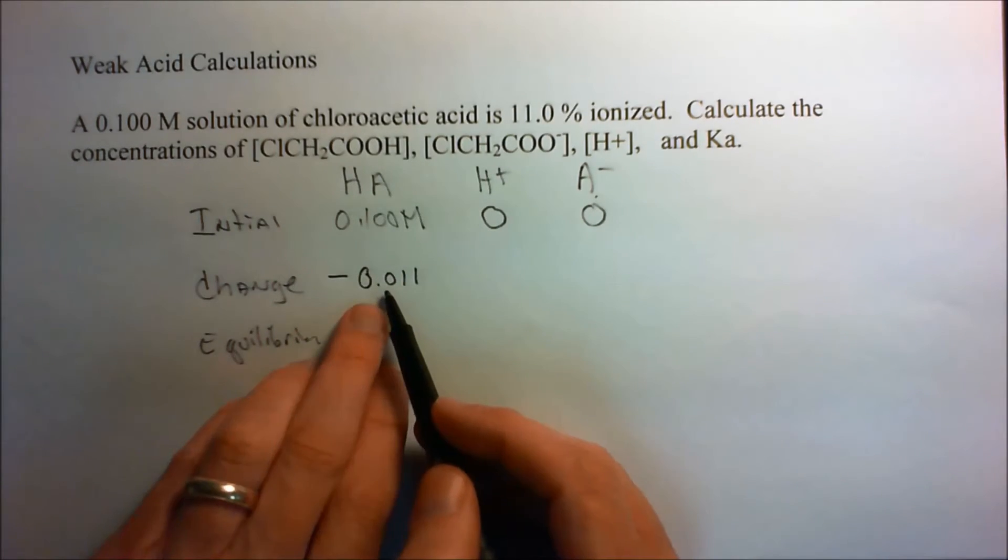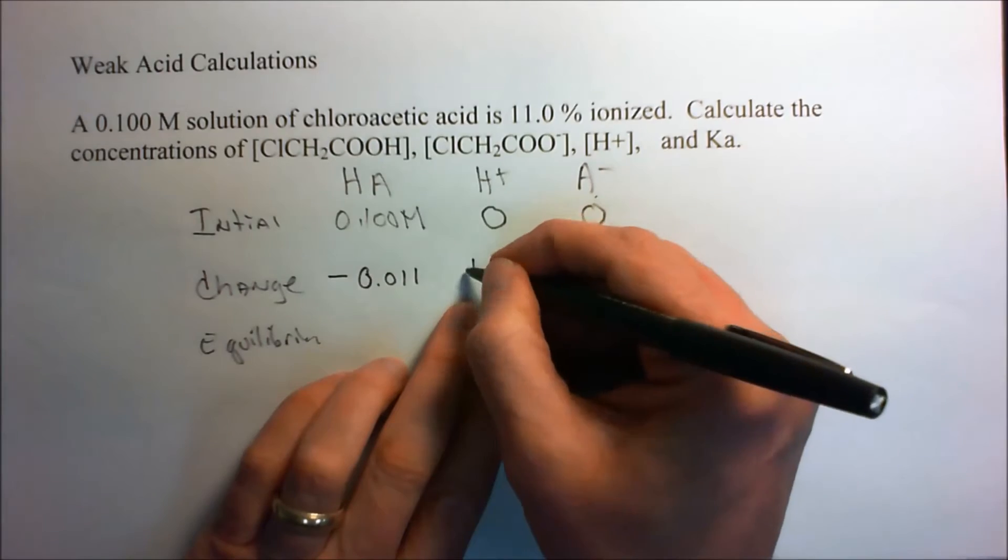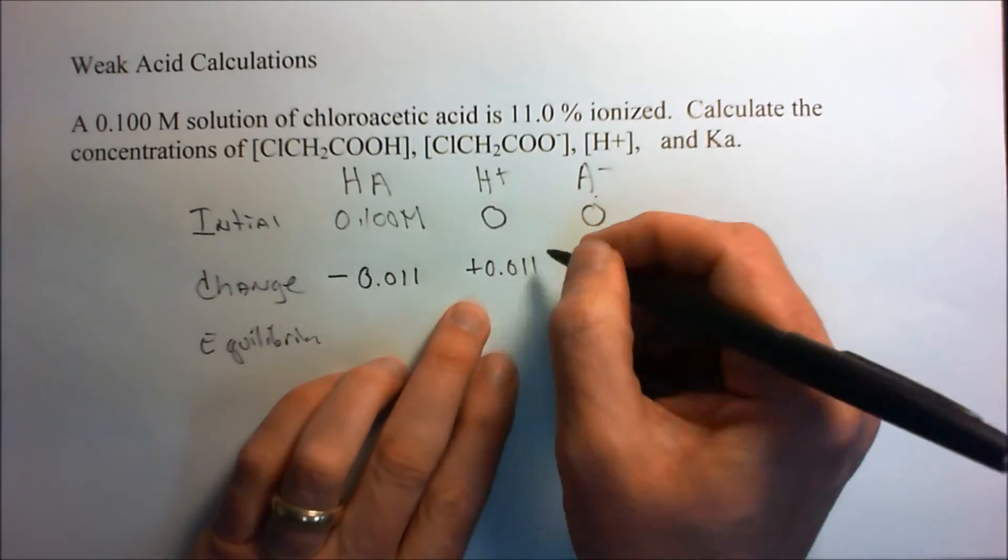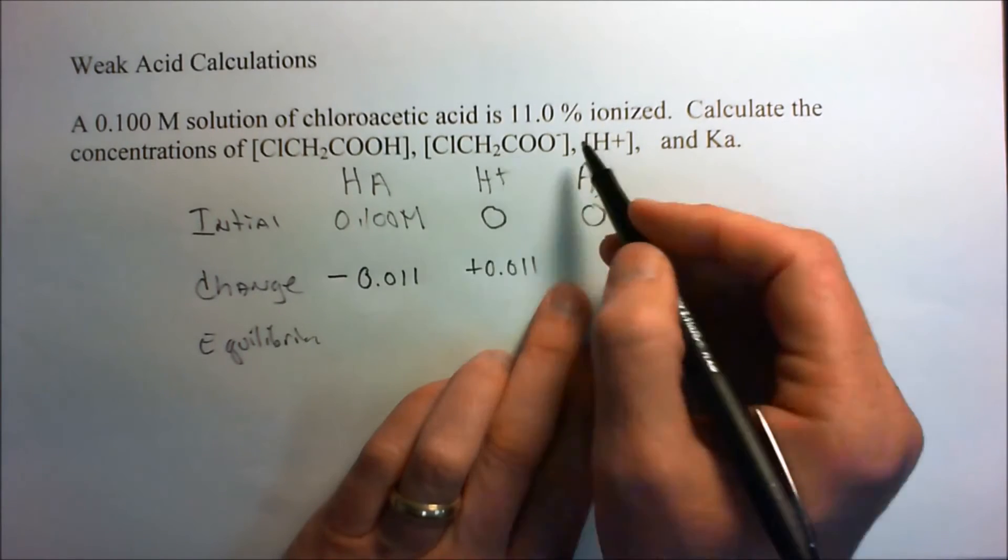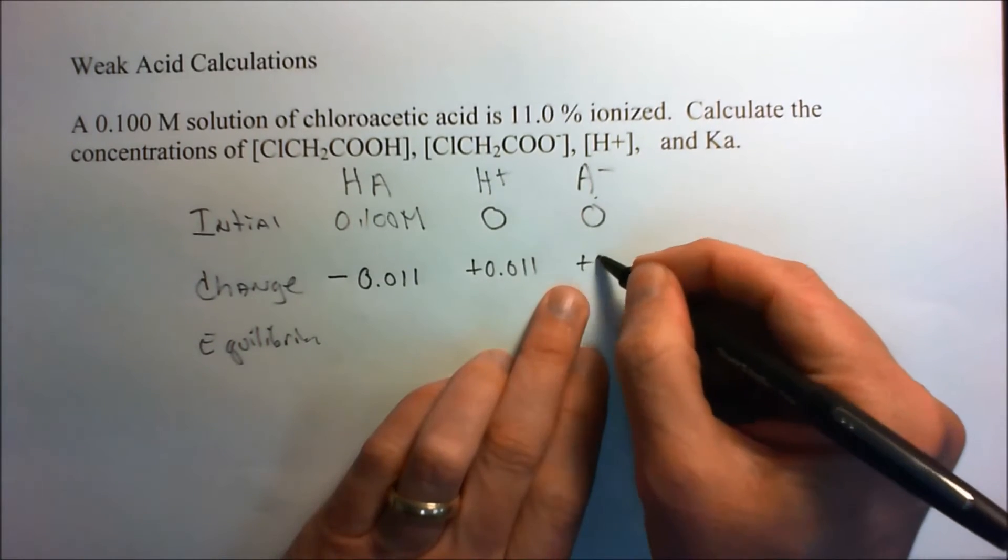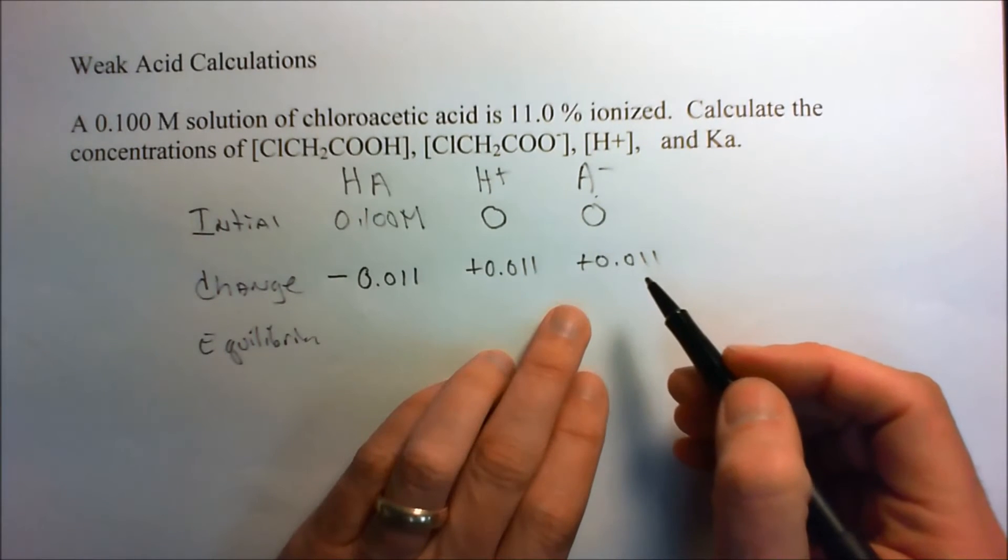Well if it's losing that, and since it's monoprotic, it's going to gain 0.011 in H plus, and it's going to gain also, since this is 1 to 1, plus 0.011 for the conjugate base.